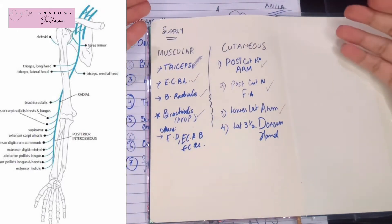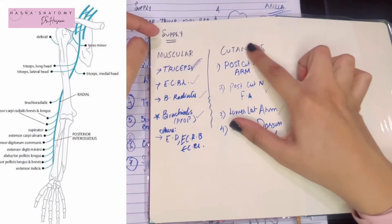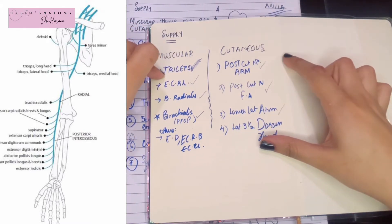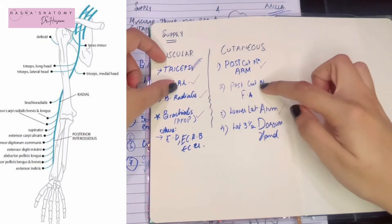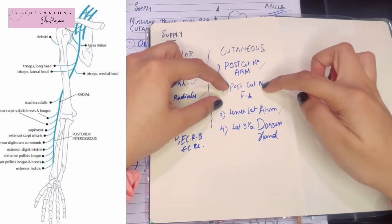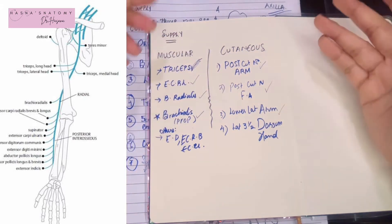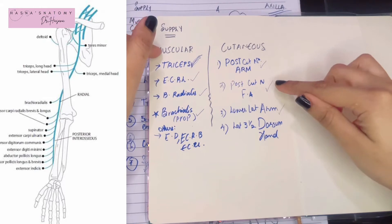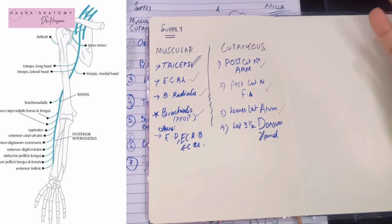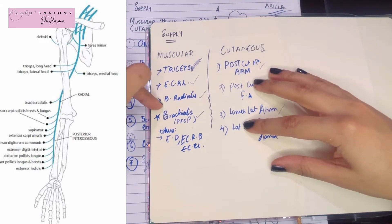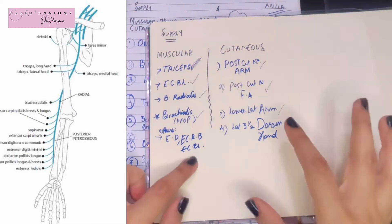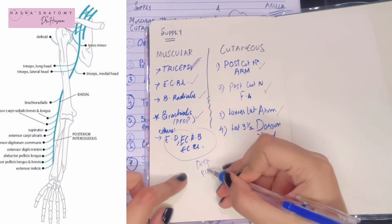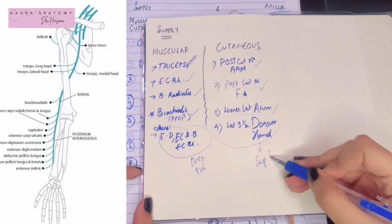To recap: before the spiral groove, the radial nerve gives the posterior cutaneous nerve of the arm and supplies the long and medial heads of the triceps. Inside the spiral groove, it supplies the posterior skin of the forearm and the lower lateral arm via the posterior cutaneous nerve of the forearm and the lower lateral cutaneous nerve of the arm, plus the lateral and medial heads of the triceps. After the spiral groove, it supplies the extensor carpi radialis longus, brachioradialis, and brachialis. What remains is supplied by the deep terminal branch — the posterior interosseous nerve — and the superficial branch of the radial nerve, which supplies the dorsum of the hand.